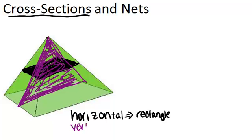For example, this pyramid has at least two different cross-sections: a rectangle if you cut it one way and a triangle if you cut it another way. If we started to take diagonal cross-sections, we could get even different shapes.